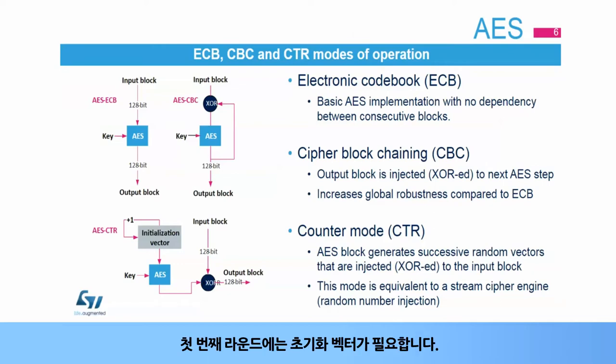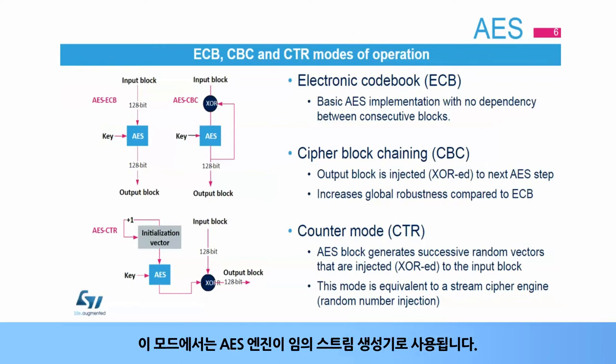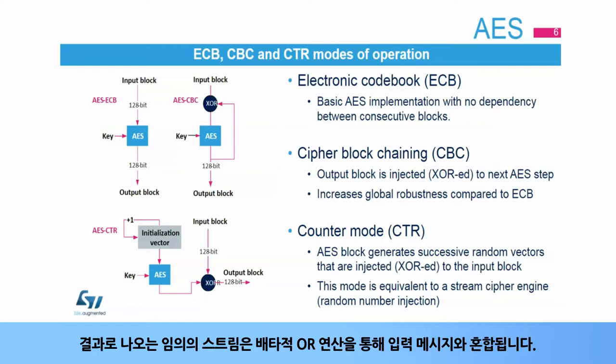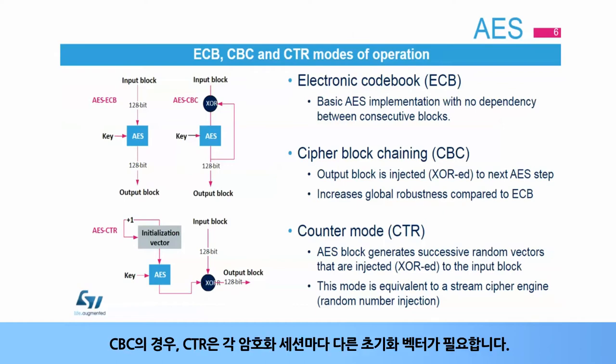For the first round, an initialization vector is required. The third mode of operation is the counter mode, or CTR. In this mode, the AES engine is used as a random stream generator. The resulting random stream is mixed with the input message with an exclusive OR operation. As for CBC, CTR requires an initialization vector different for each encryption session.